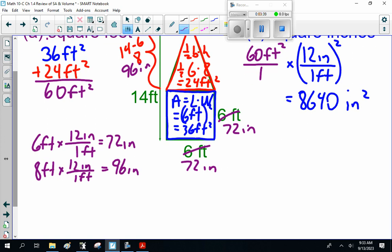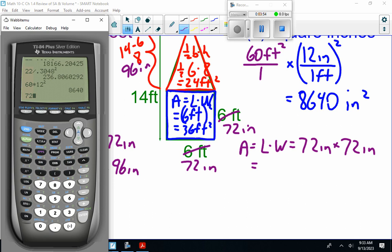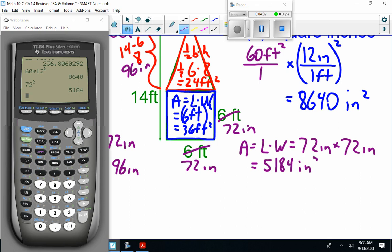So, let's do it the hard way. Okay, area of the square is length times width, which is 72 inches times 72 inches. 72 squared is 5184 inches squared.